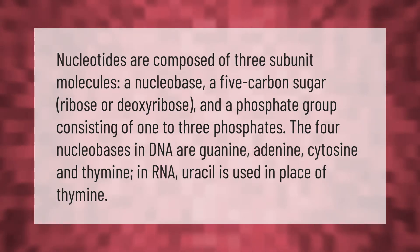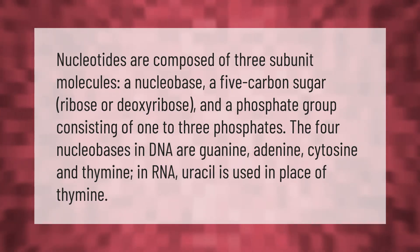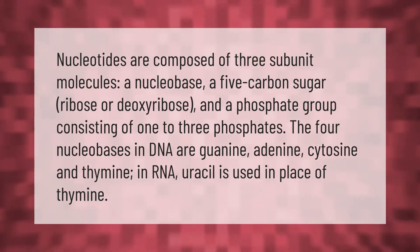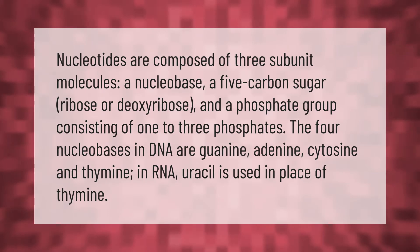Nucleotides are composed of three subunit molecules: a nucleobase, a five-carbon sugar (ribose or deoxyribose), and a phosphate group consisting of one to three phosphates.